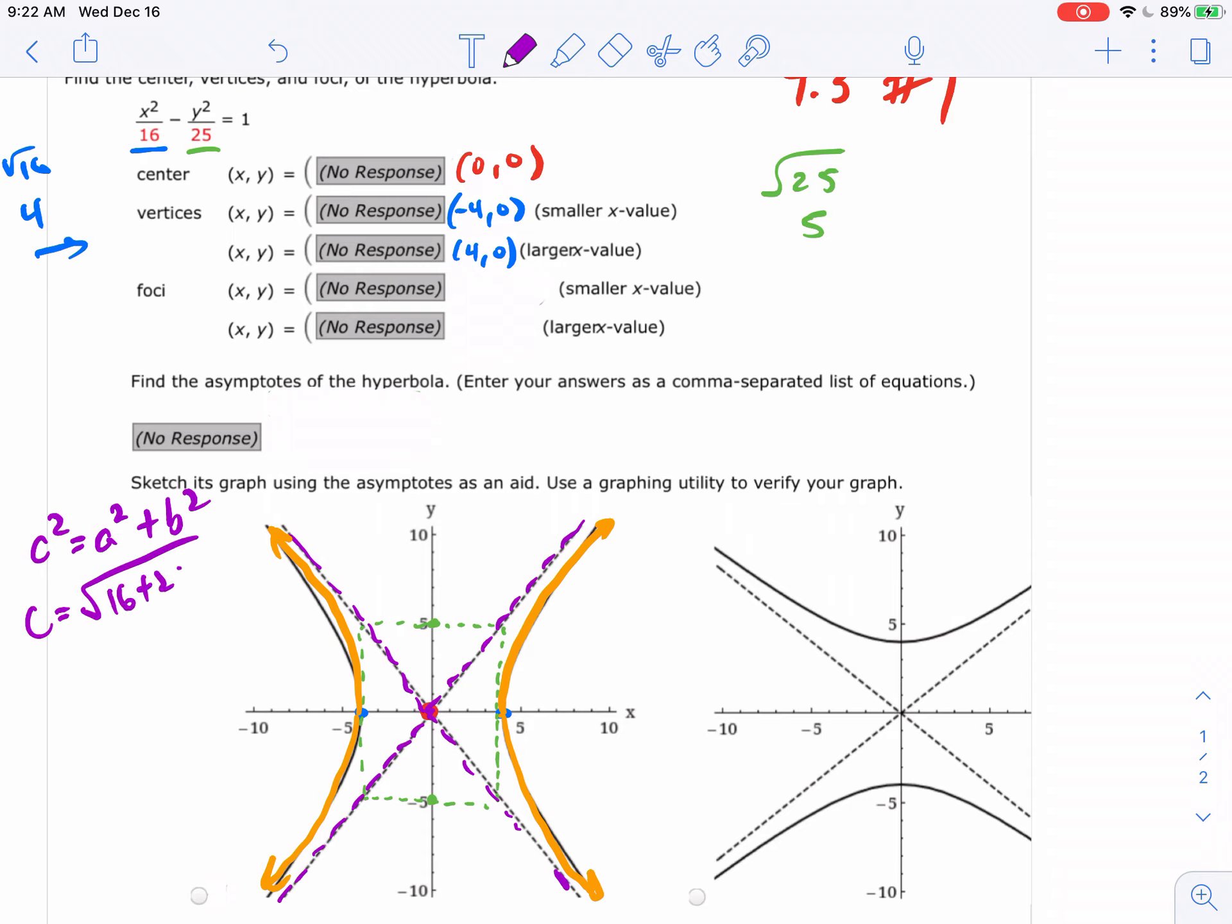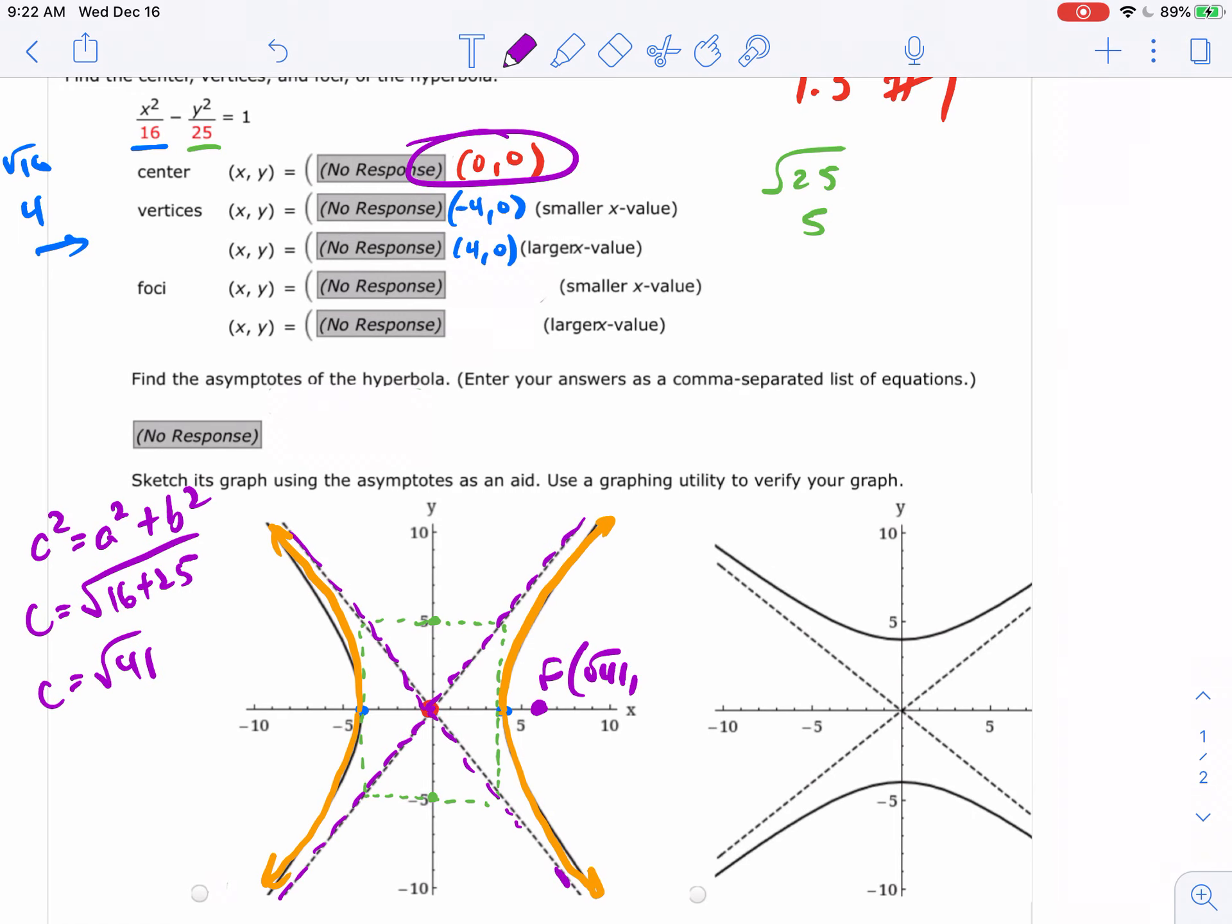So my c then would be the square root of - all you have to do is add your two denominators together - and I'm getting the square root of 41, which is not nice, it can't be simplified. So if I move it, it's a little bit more than 6, not quite 7. So if I go 1, 2, 3, 4, 5, 6, I'm gonna have a focus that's about right here. Basically I add it to my center, so if my center is at (0, 0), I'm gonna go to the right the square root of 41 and I'm gonna go to the left the square root of 41. So this would be my smaller one and this technically is my larger one. They want the larger and smaller x-values, and that's how you do that problem.